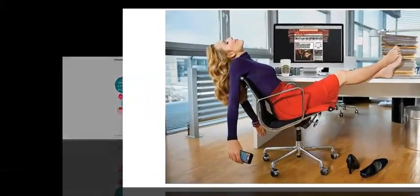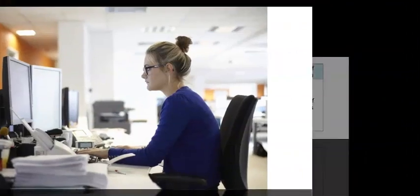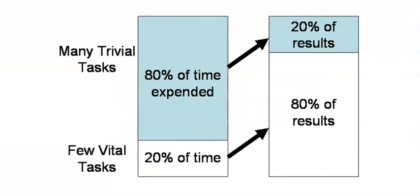The Pareto principle applies to other human activities. The Pareto principle states that 20% of vital time spent on tasks can produce 80% of results. Subsequently, 80% of time spent on trivial tasks can produce 20% of results. This is the Pareto principle.